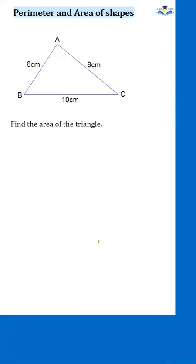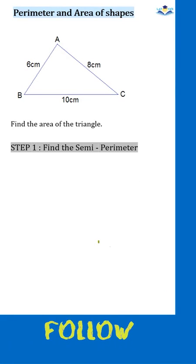The first step in finding the area of a scalene triangle is to find the semi-perimeter. We find the semi-perimeter of a shape by adding all the sides and dividing by 2.